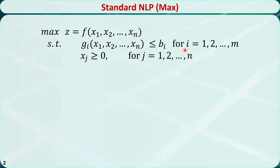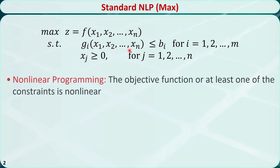For this problem formulation, if the objective function is nonlinear, or at least one of the constraints is nonlinear, then this problem is called a nonlinear programming problem. Nonlinear programming problems are more commonly seen in real life than linear programming problems. Also, nonlinear programming problems are in general more difficult to solve than linear programming problems.